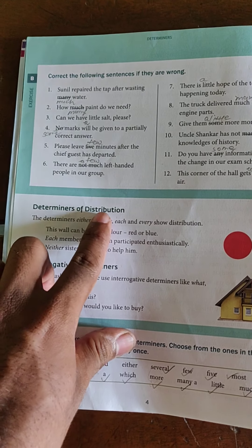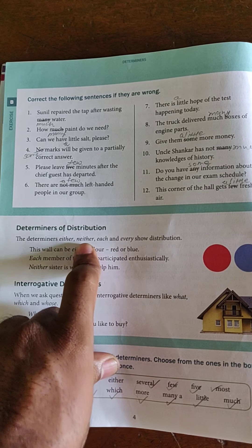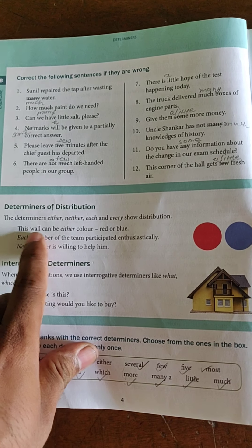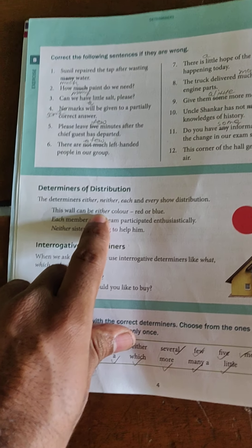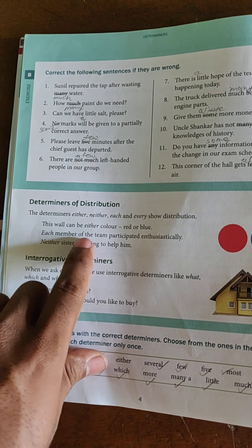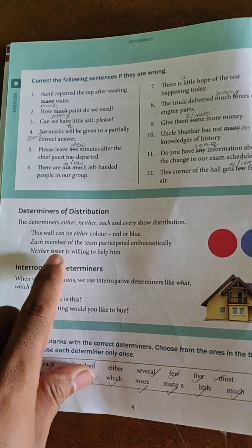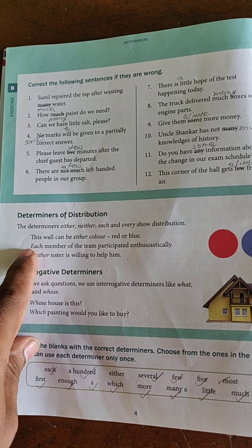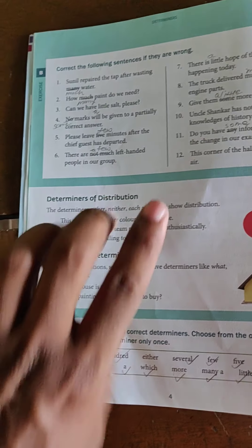Another point is determiners of distribution. The determiners either, neither, each and every show distribution. For example: 'This wall can be either red or blue.' Note: you can pronounce it 'either' or 'either.' Another example: 'Each member of the team participated enthusiastically.' And: 'Neither sister is willing to help him.' So either, each, and neither are called determiners of distribution.